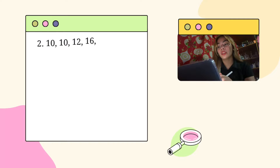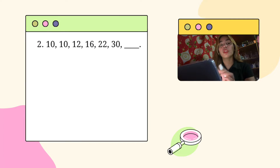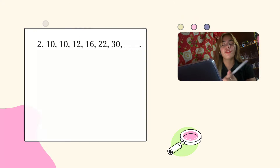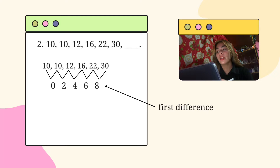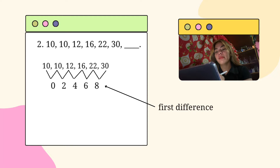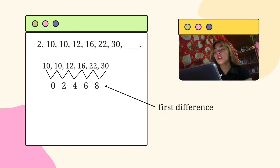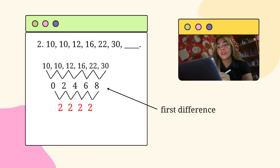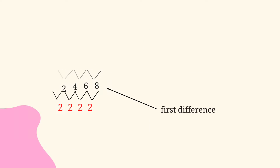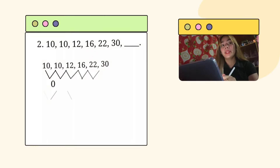We move on now to the next problem, which follows the same procedure as the first. Just like the first difference, we must subtract the first term from the second term, and from there subtract the previous term from the next term. To get the second difference, repeat the process that we used in the first problem. So this will be the answer.